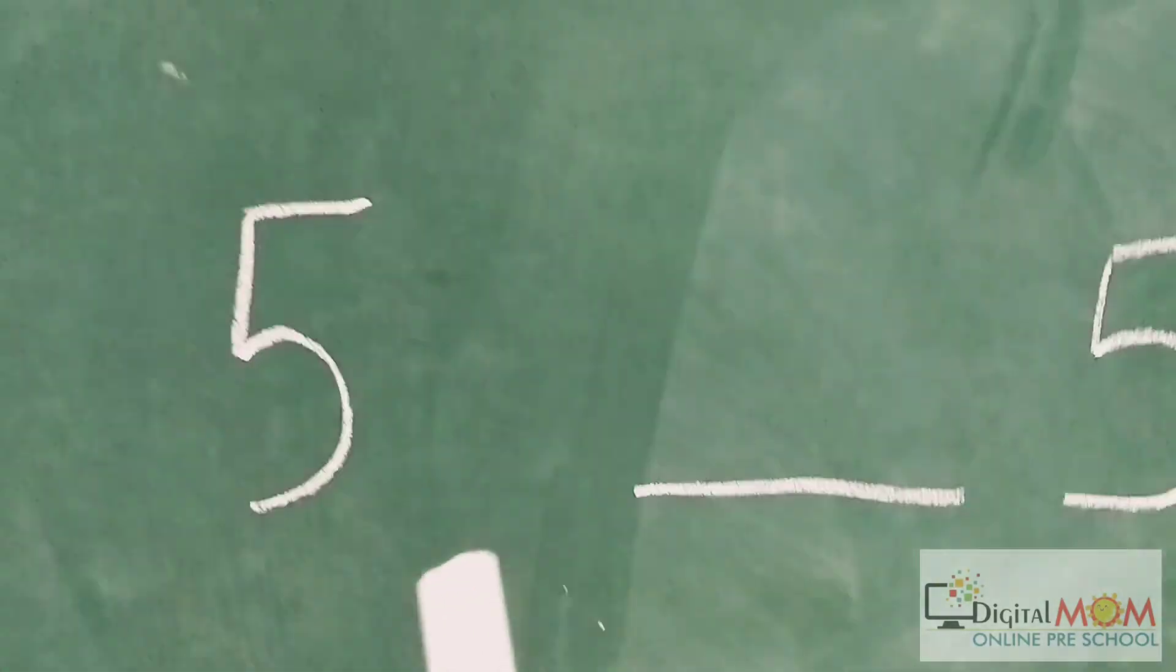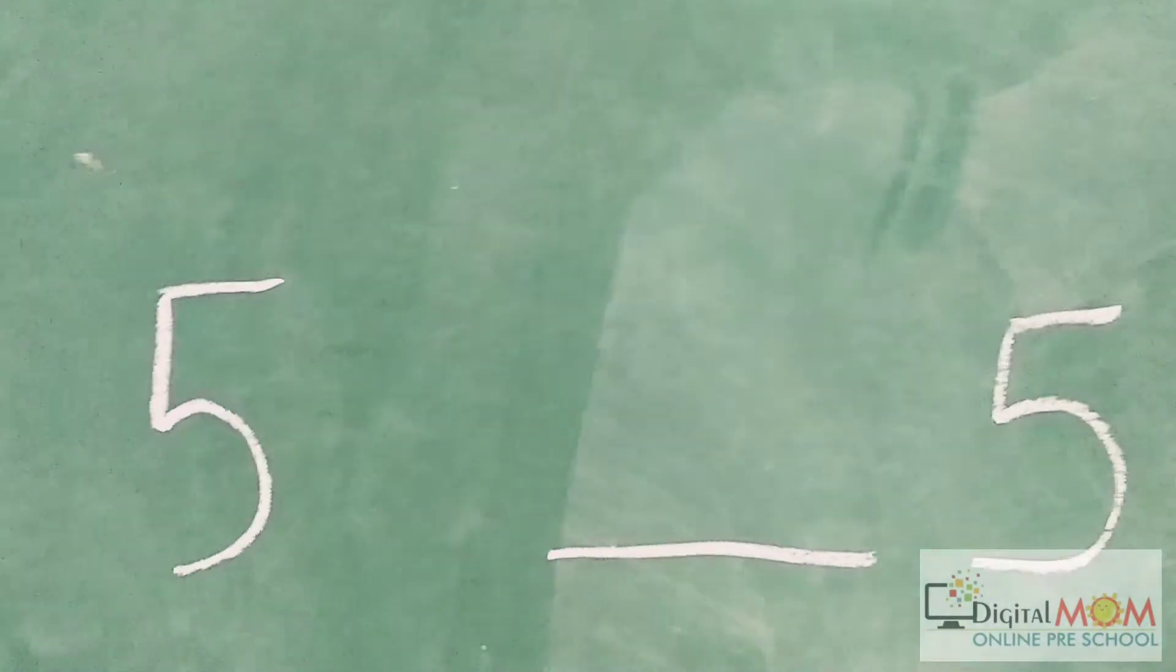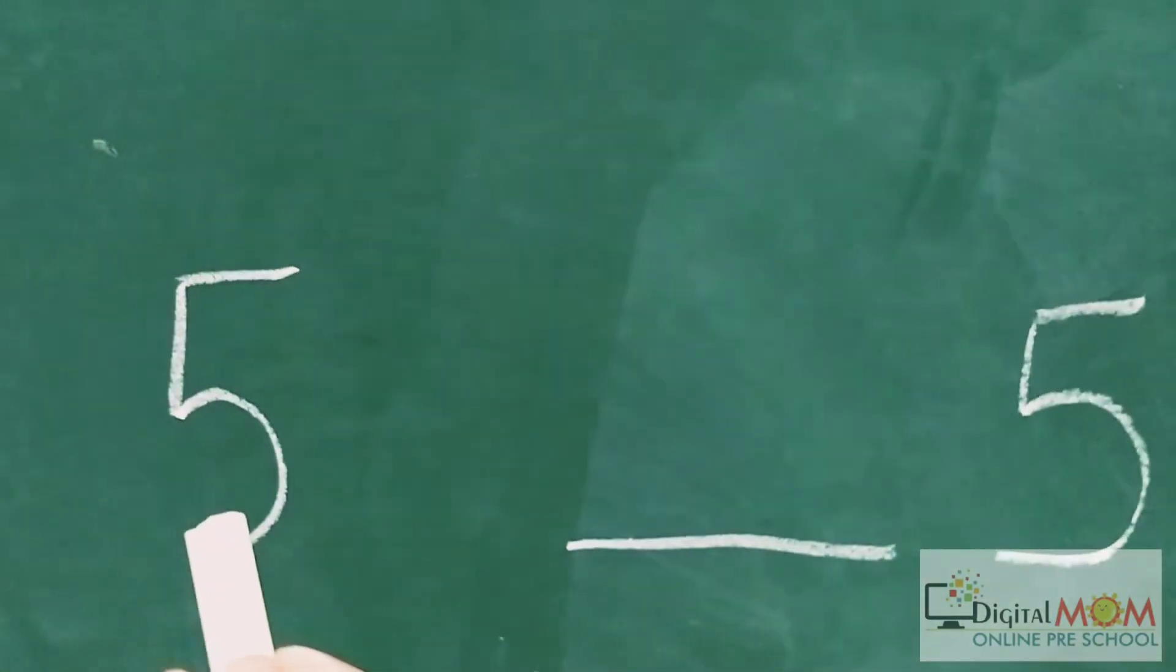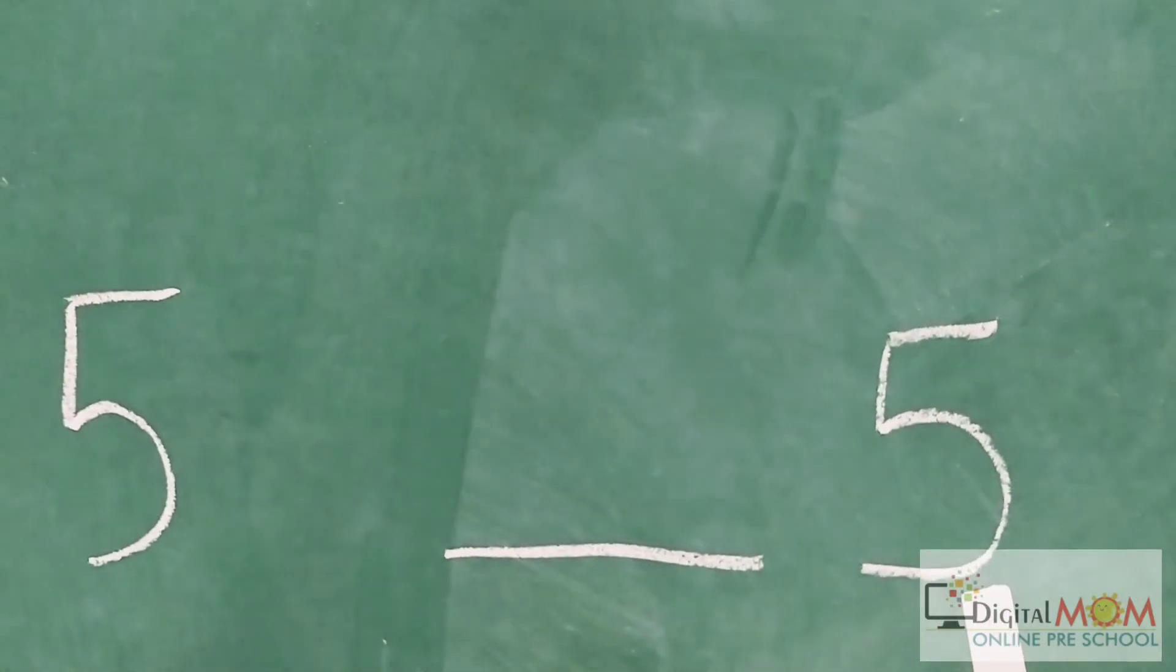Equal to means when on both the sides we are having the same number. Here we are having 5. On the other side we are again having number 5.